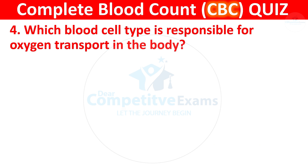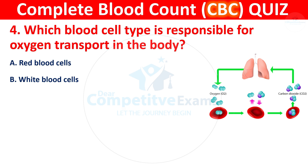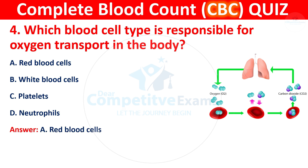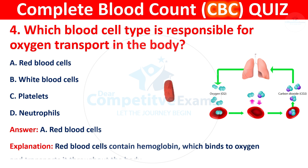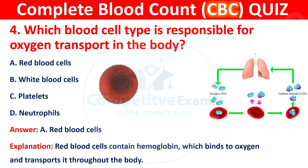Question 4: Which blood cell type is responsible for oxygen transport in the body? Your options are Red blood cells, White blood cells, Platelets, or Neutrophils. The correct answer is A, Red blood cells. Red blood cells contain hemoglobin, which binds to oxygen and transports it throughout the body.